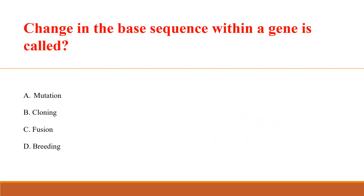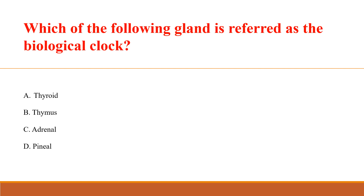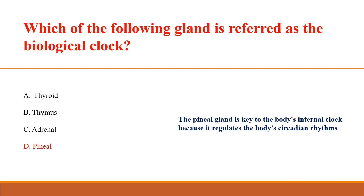A change in the base sequence within a gene is called: Answer A: Mutation. Mutation means a change in the DNA base sequence. Which of the following glands is referred to as the biological clock? Answer D: Pineal. The pineal gland is key to the body's internal clock because it regulates the body's circadian rhythms.